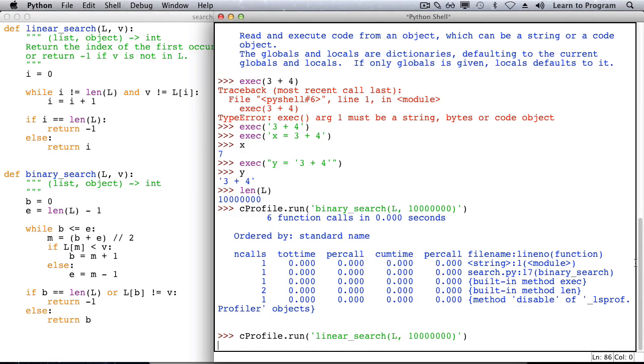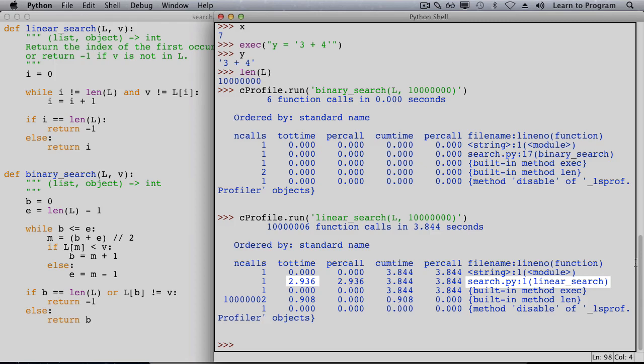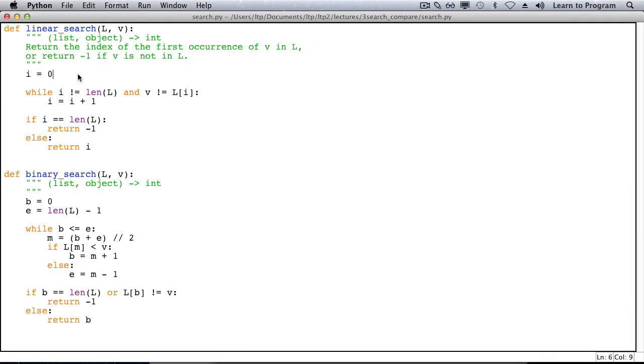Here we see that in linear search, there was one call on the function linear search. It took nearly three seconds to complete. There were 10 million and two calls on method len. That took nearly a second just by itself. That gives us a hint that we could optimize linear search.